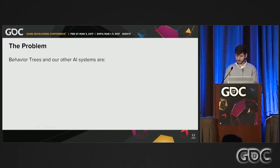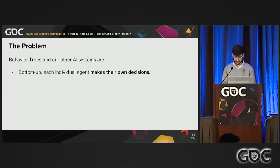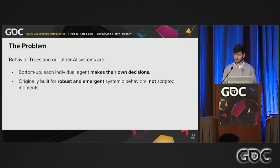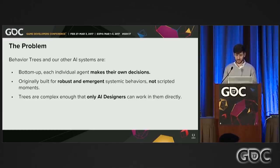The problem I'm mostly going to talk about today stems from a few things. Firstly, our behavior trees are very bottom-up — each individual is making their own decisions. We have very few coordinators or managers of any type; it's a very individualistic system. Originally, this was built for the robust and emergent systemic behaviors that would flourish in the open world, but not for any sort of scripted content. And the behavior trees are complex enough that content designers are not going to be able to open them, look inside, modify them, or understand what's going on.